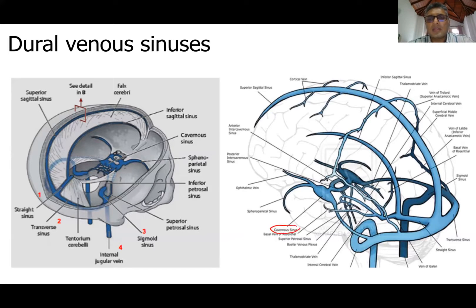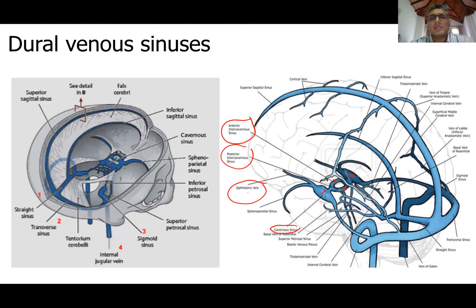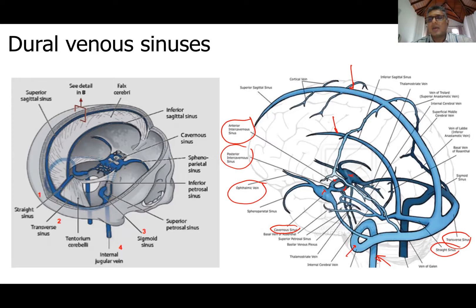The cavernous sinus lies on either side of the pituitary fossa with anterior and posterior intercavernous sinuses connecting them. You can see the ophthalmic vein draining the orbit into the cavernous sinus. The full pathway is: superior sagittal sinus, inferior sagittal sinus, straight sinus, transverse sinus, sigmoid sinus, then internal jugular vein on either side, plus superior and inferior petrosal sinuses and other sinuses.